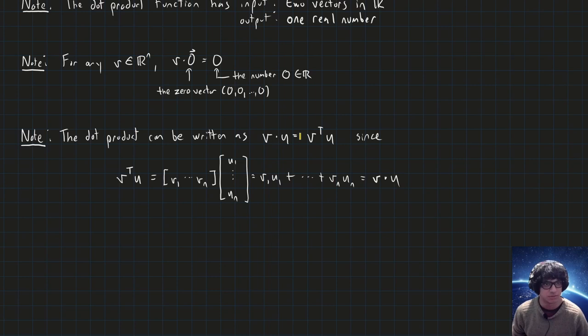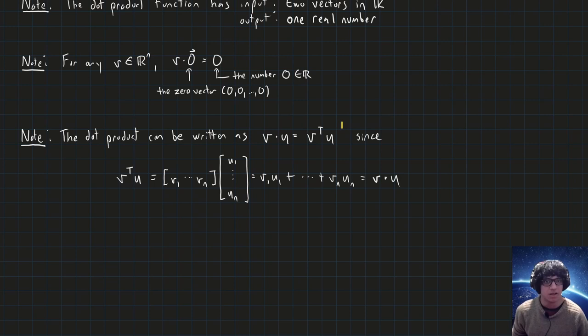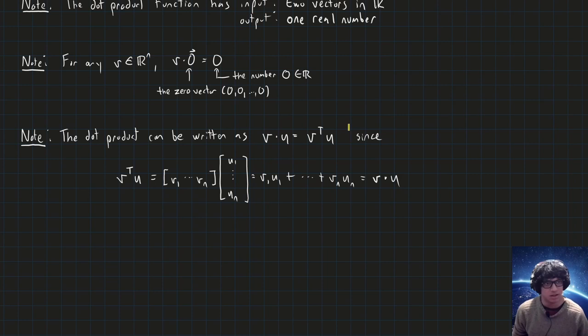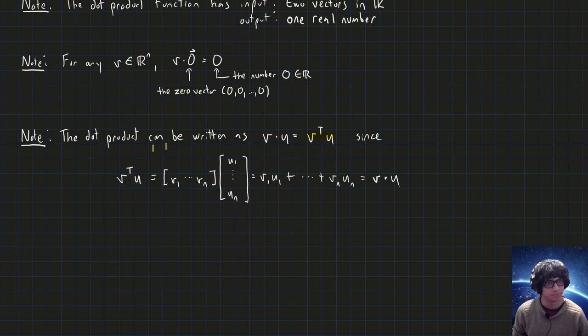The dot product can also be written as a product of matrices. We haven't gotten into matrix multiplication yet, but we should note that v dot u is the same thing as v transpose times u, where times means matrix multiplication. It will be useful to identify that these two things are the same and be able to go back and forth between them.